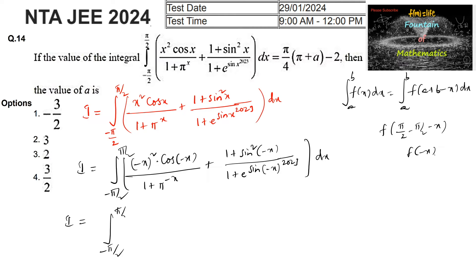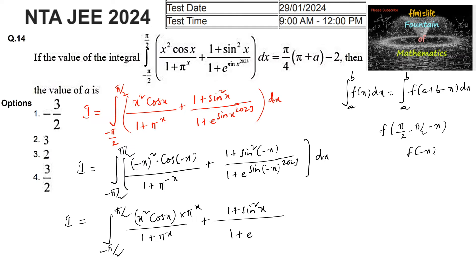Upon simplifying, we get ∫_{−π/2}^{+π/2} [x² cos x / (1 + π^(−x))] · (1 + πˣ)/πˣ + [(1 + sin²x) / (1 + e^(−sinx)^2023)] dx. Since sin²(−x) = sin²x (even power), and (−sinx)^2023 = −(sinx)^2023 (odd power), we will be getting minus sin x to the power 2023.